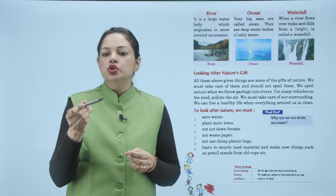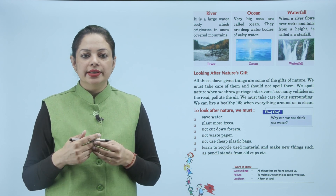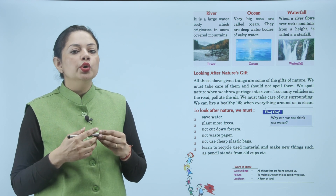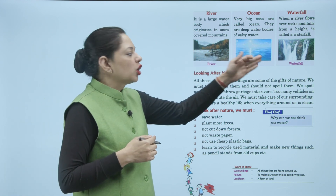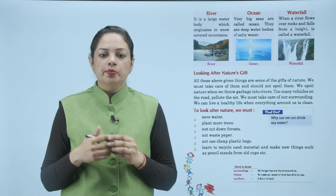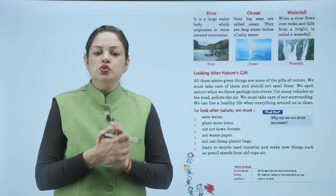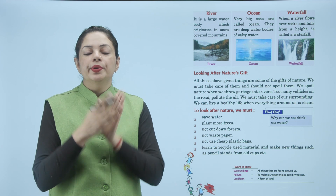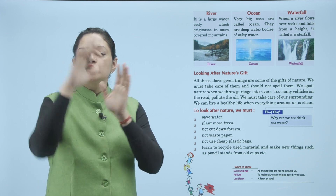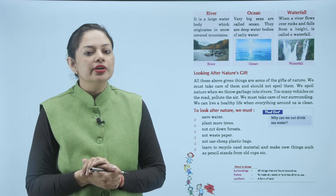पानी के और भी sources हैं — river, ocean and waterfall। River: it is a large water body which originates in snow-covered mountains. River कहाँ से आती हैं — जो snow-covered mountains होती हैं, जब गर्मियाँ आती हैं और snow melt होना शुरू होती है, तो वहाँ से rivers generate होती हैं।